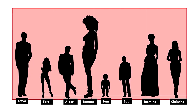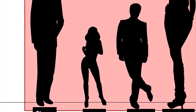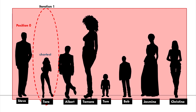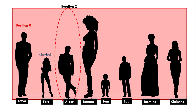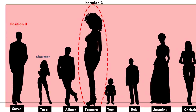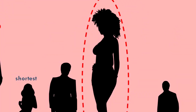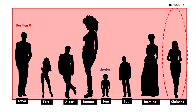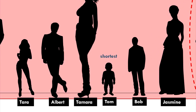So let's begin. This red zone marks our search space — the people among which we try to find the shortest person. Steve is at position 0 and will be assigned as the current shortest person, as we have not looked any further. In the first iteration, we compare Tara's height to that of the current shortest person, that is Steve. Tara is shorter, so she will be assigned as the current shortest person. In the second and third iterations, comparisons yield that Tara is still the shortest, as Albert and Tamara are both taller. In the fourth iteration, the height comparison suggests that Tom is the current shortest. In the fifth, sixth, and seventh iterations, Tom still holds as the shortest person.